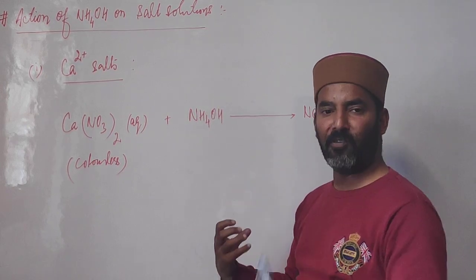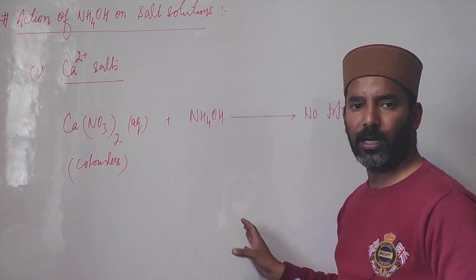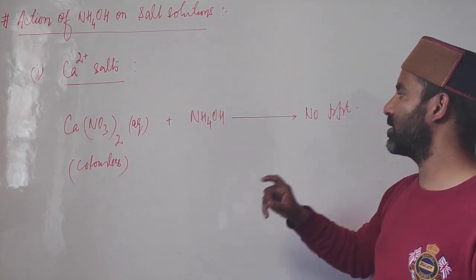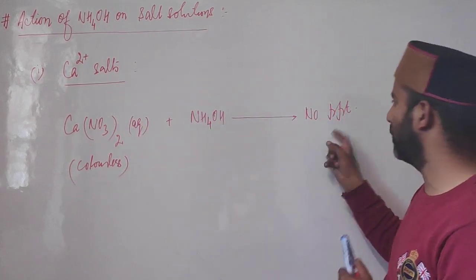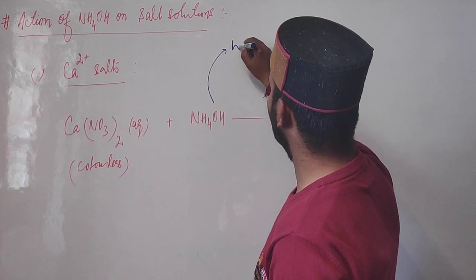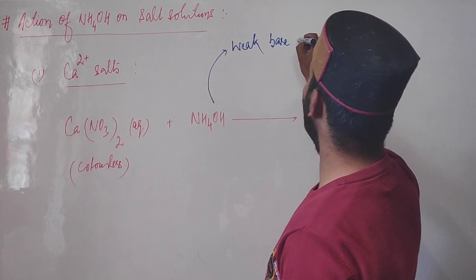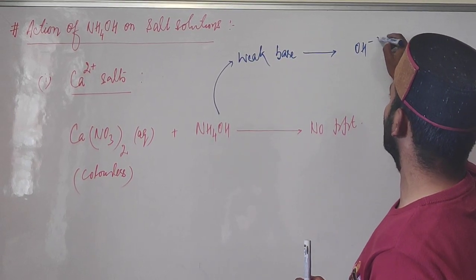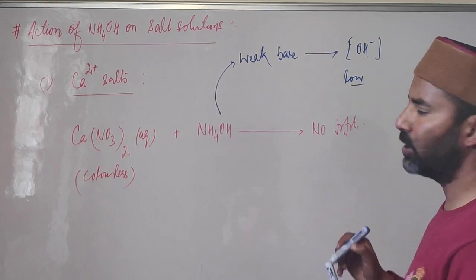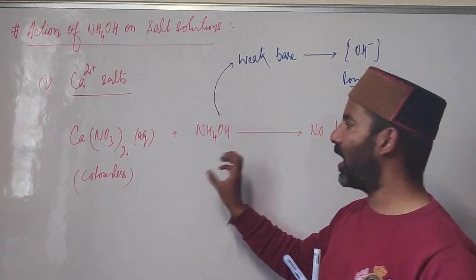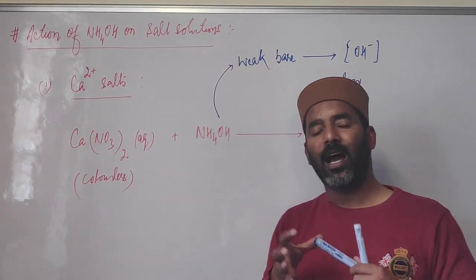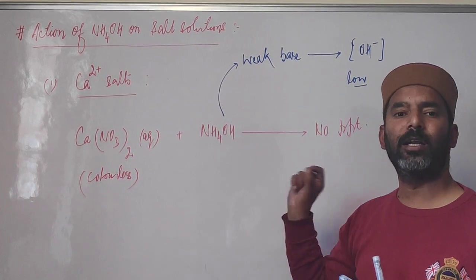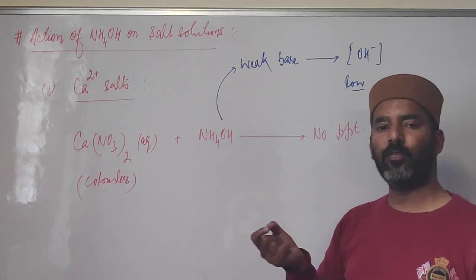A calcium salt can be easily identified by adding NaOH or ammonium hydroxide, allowing us to distinguish calcium salts from other salts. The reason is that ammonium hydroxide is a weak base, and being weak it undergoes ionization to a very small extent. The concentration of hydroxyl ions is very low — too low to cause precipitation of calcium ions as calcium hydroxide.